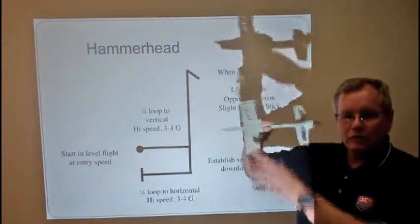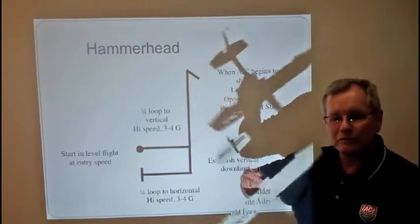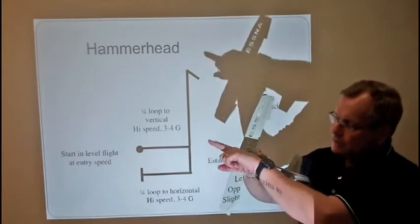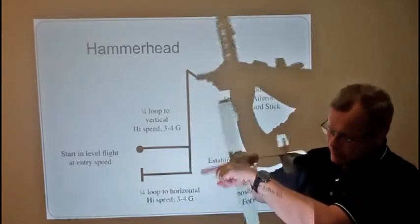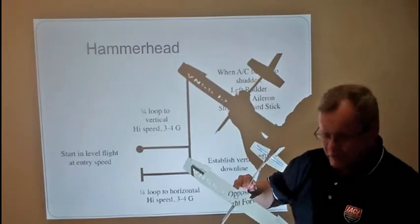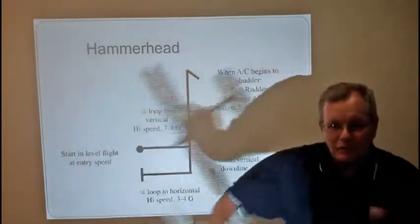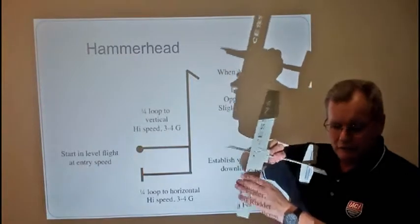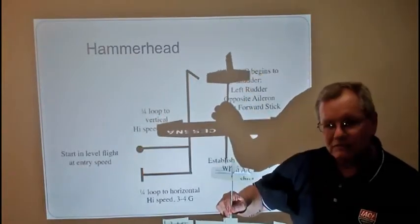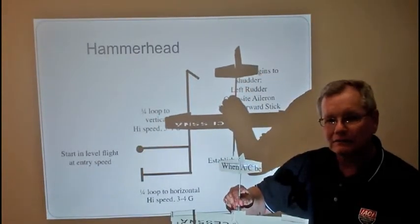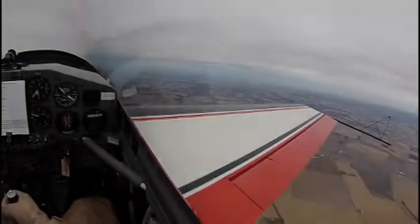Now the last part, you don't want to have any pendulum effects at the bottom. So at this point you have full left rudder. As you get about within 30 degrees away from full down, very quickly go full opposite rudder and then neutral. And if you do that, the airplane will just stop like putting a key in a lock. So this is the hammerhead.